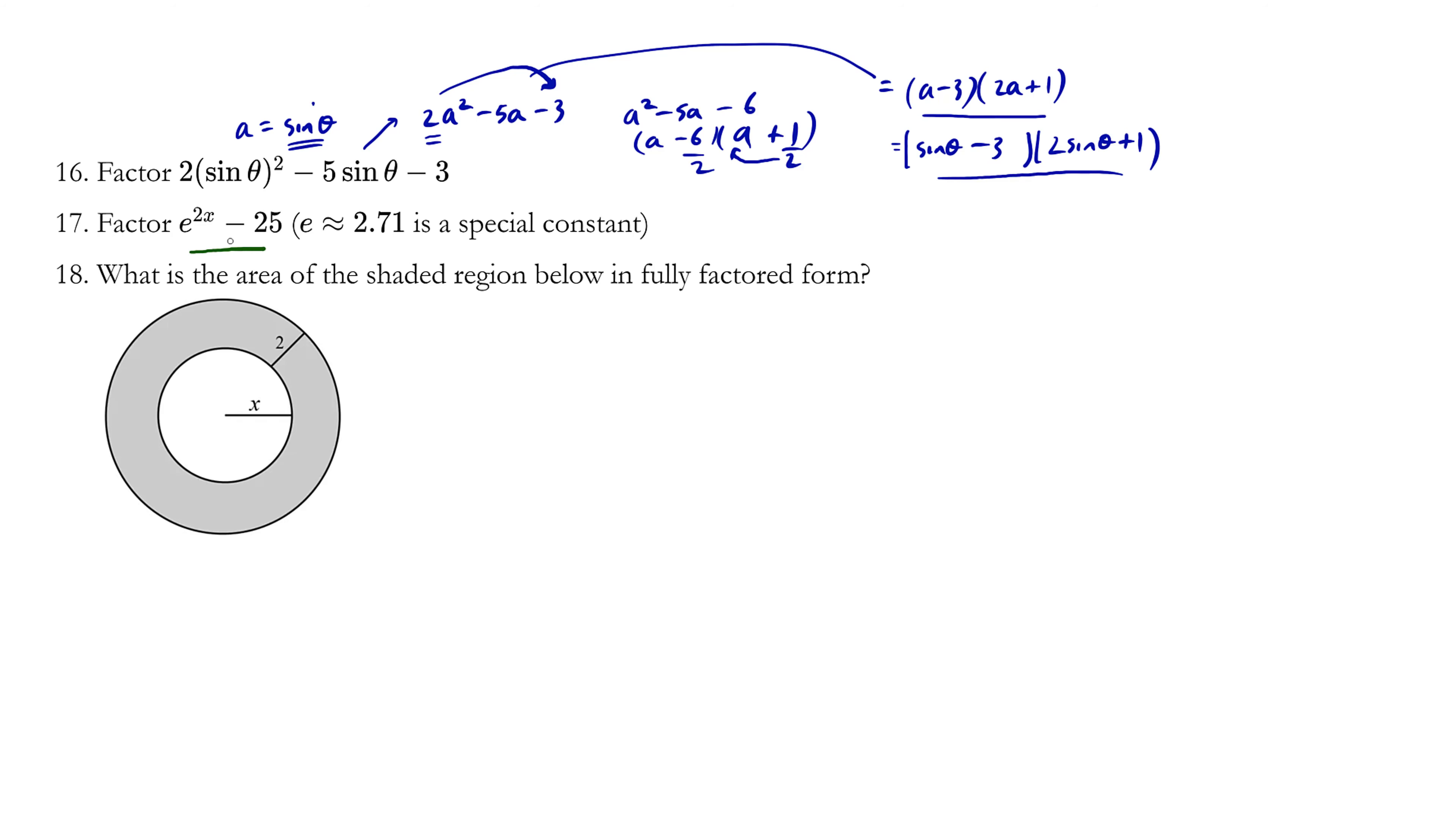Now let's try question number 17. Looks a bit strange, but hopefully you recognize that this here is difference of squares. This question is the same thing as (e^x)² because you multiply the exponents - x times 2 is the same thing as 2x - minus 25, which is the same thing as 5².